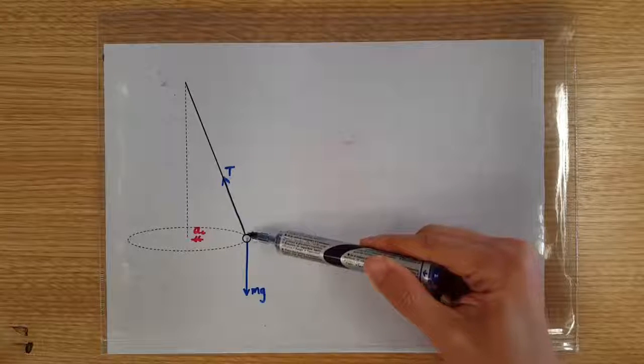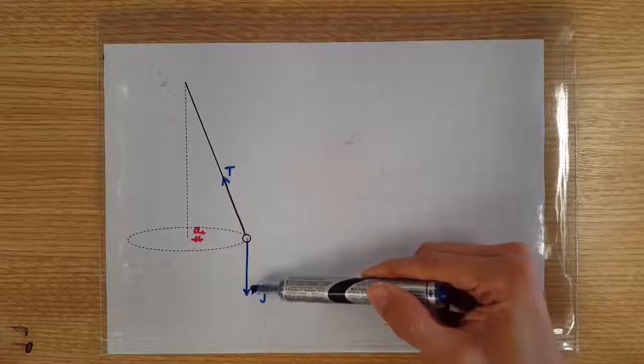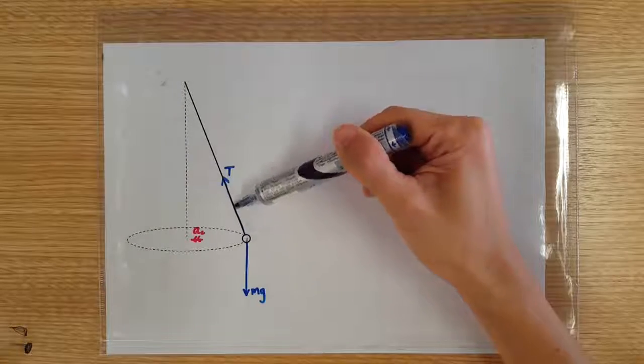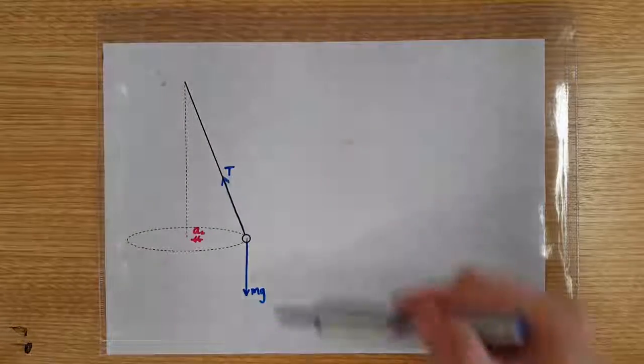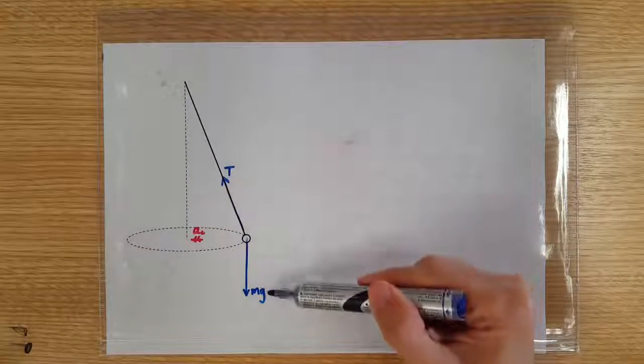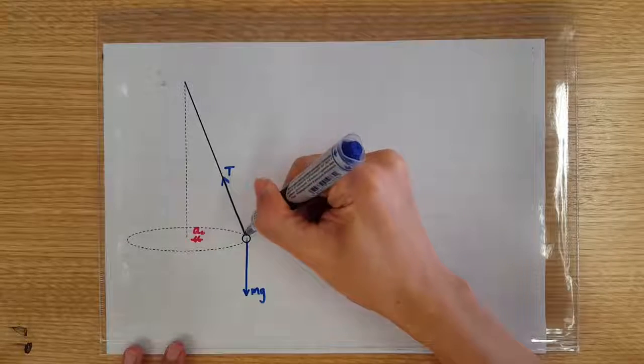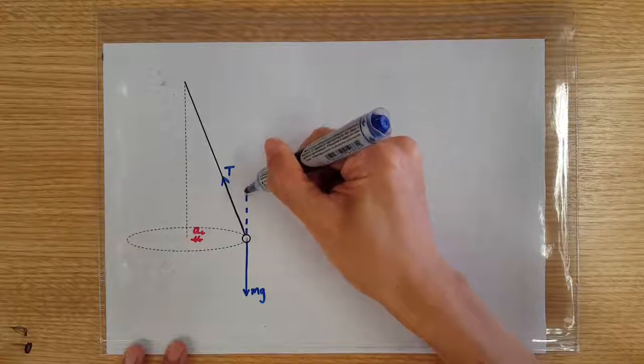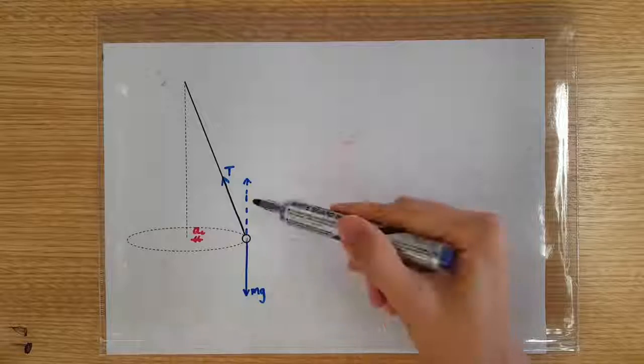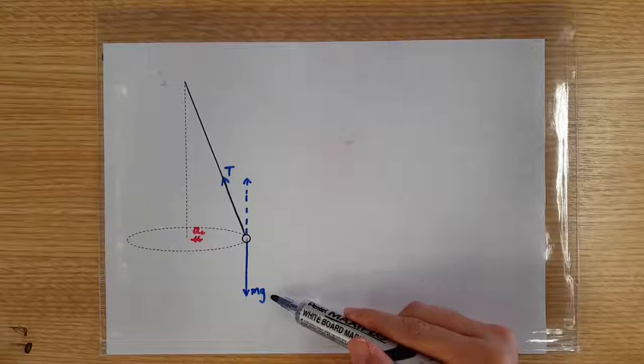There are only two forces acting on the pendulum, the downward weight and tension in this direction. And the tension force has got to be larger than the weight because the vertical component of the tension must be able to just balance the downward weight.